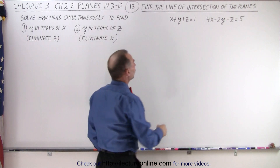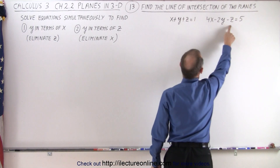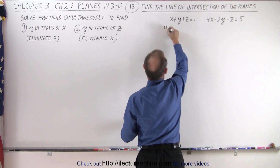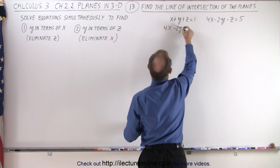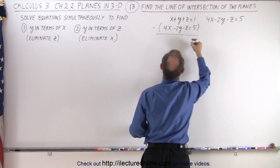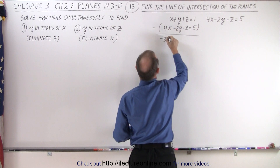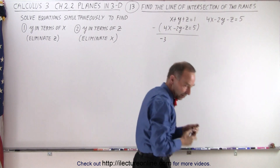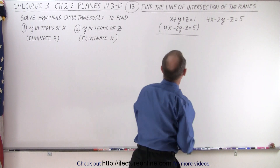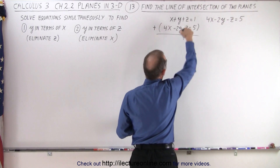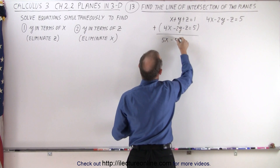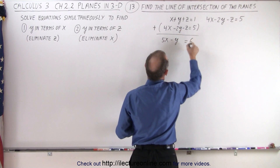How do we eliminate z? Notice we have a positive z here and a negative z there, so we can add the two equations together. So we get 4x minus 2y minus z is equal to 5. We want to add, otherwise the z's don't cancel. So adding the two equations together: x plus 4x which is 5x, that would be minus y, z's cancel out, which is equal to 6.